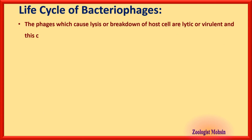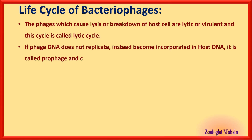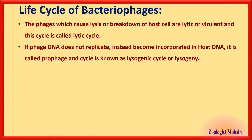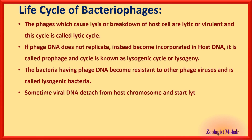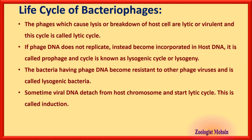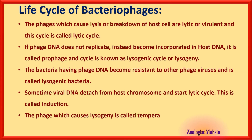Phages that cause lysis or breakdown of the host cell are called lytic or virulent phages, and this process is called the lytic cycle. If phage DNA enters the host but does not replicate and instead becomes incorporated into the host DNA, it is called a prophage and the process is called lysogenic cycle or lysogeny. Bacteria carrying phage DNA become resistant to other phages. Sometimes viral DNA detaches from the host chromosome in a lysogenic bacterium and restarts the lytic cycle — this is called induction. The phage that causes lysogeny is called a temperate or lysogenic phage.